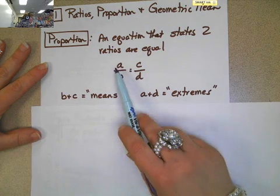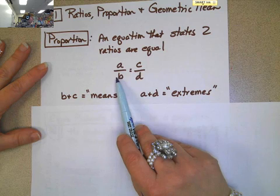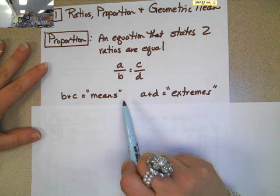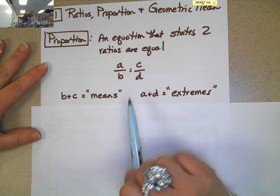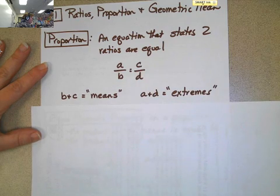So, also this is the first term, second term, third term, fourth term. So, the first and fourth are always the extremes and the second and third are always the means.